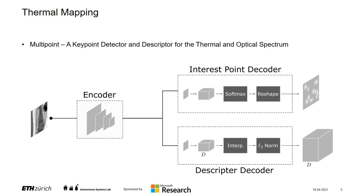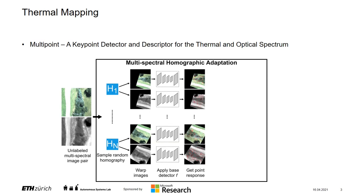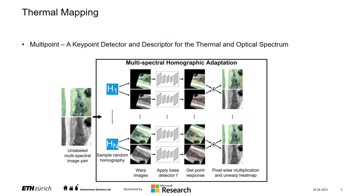One key difference to SuperPoint is the generation of keypoint labels. We extend the concept of homographic adaptation to the multispectral domain. Similar to SuperPoint, we warp the images first with a randomly sampled homography. We then utilize a base detector to get a heatmap of keypoint probabilities for each image individually. But then we combine the heatmaps with a pixel-wise multiplication to only get labels that have a strong response in both spectra.